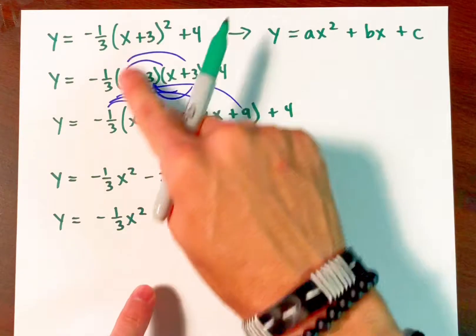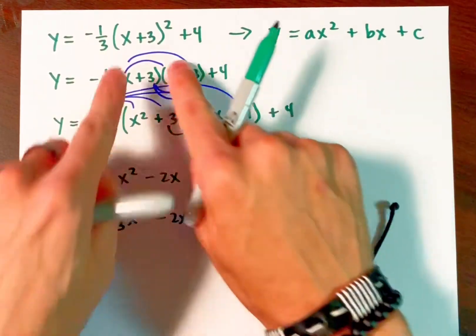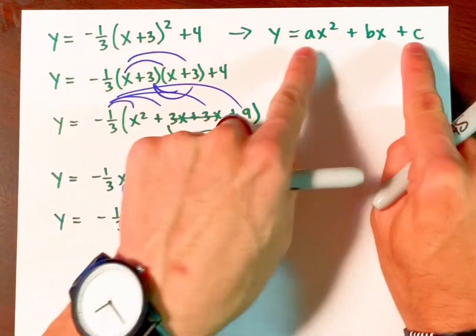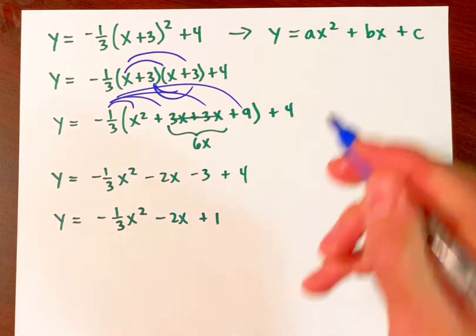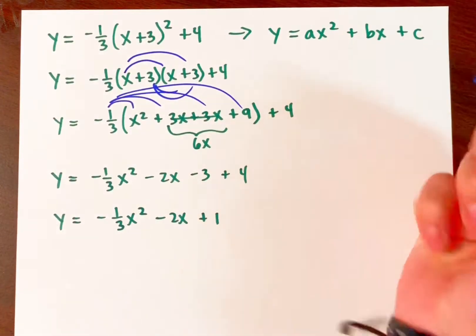So notice that by applying the distributive property, we have turned vertex form into standard form here, where if you wish to identify a, b, and c, well, they are sitting right in front of you.